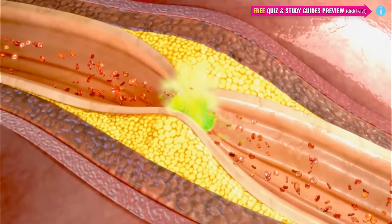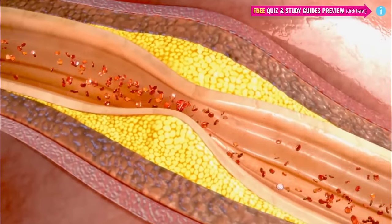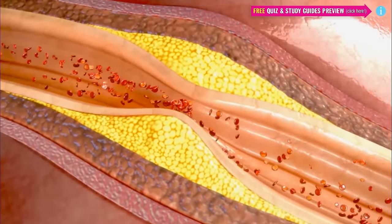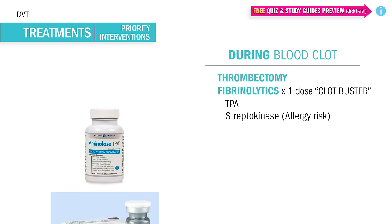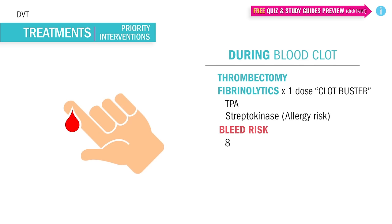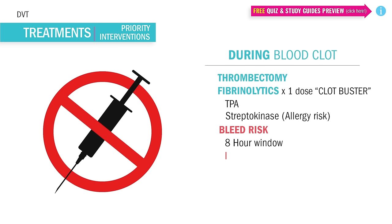These drugs are like the atomic bomb — they're one-time push drugs. So we give either TPA or streptokinase, but streptokinase has the most allergies associated with it. The big thing with these atomic bombs is the huge bleeding risk. Since they have an eight-hour or less duration, this means we're most at risk to bleed during that eight-hour window.